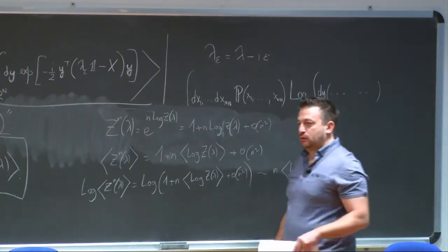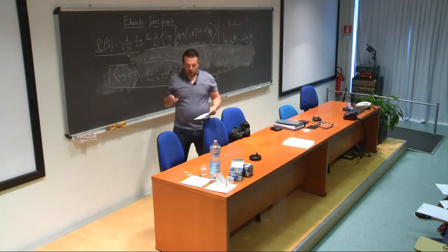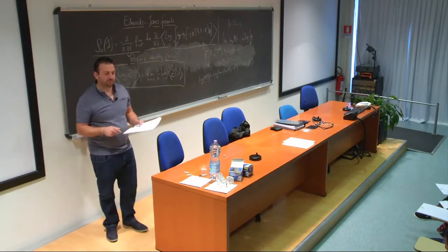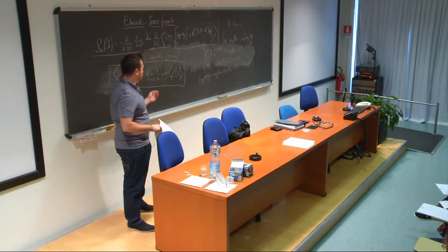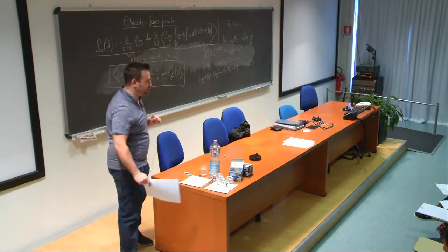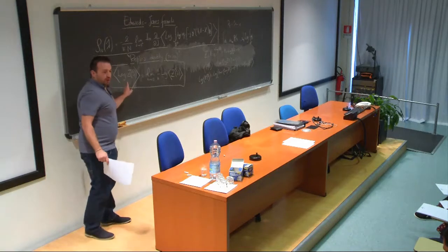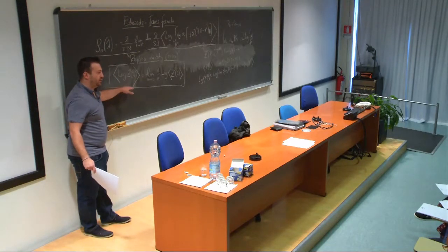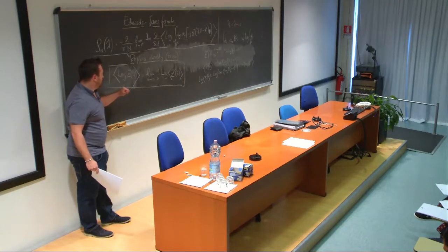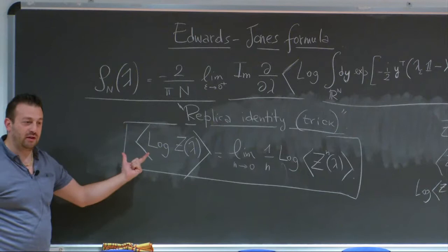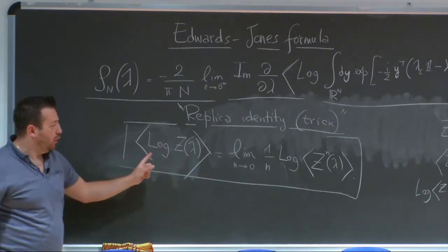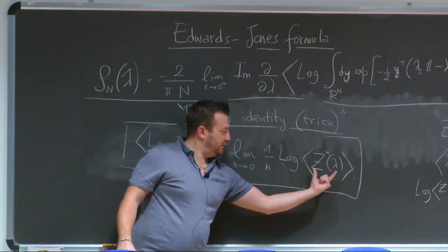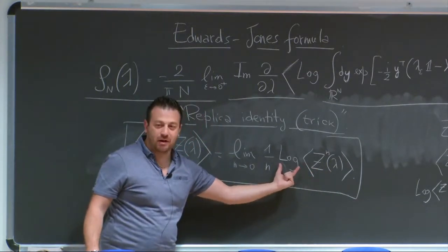So far everything is on clean grounds. Stare carefully at this identity — you will encounter it probably many times, maybe even this afternoon or in future courses. On the left-hand side we have the average of a logarithm that we don't know how to perform. On the right-hand side, the average has been moved inside the argument of the logarithm, so the logarithm is somehow out of the way. On top of that, Z of lambda is raised to some power n, and we want to evaluate this expression in the vicinity of n to 0.